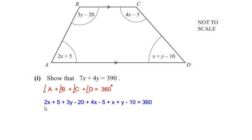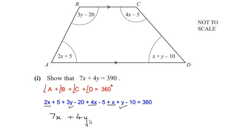Now let us combine the like terms. We have 2x plus 4x which gives us 6x, and plus 1x, so it is a total of 7x. Now combining the y terms: 3y plus y gives us a total of 4y. Combining all the numbers together gives us minus 30, so the equation is 7x plus 4y minus 30 is equal to 360.